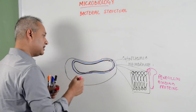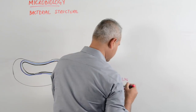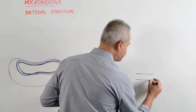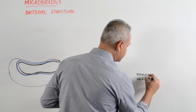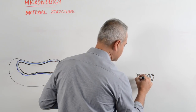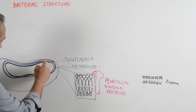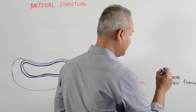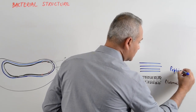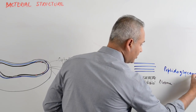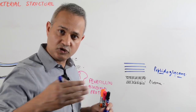So this is the plasma membrane. Outside the plasma membrane is the cell wall. The cell wall structure is actually a peptidoglycan. What happens is there are multiple layers of peptidoglycans. Peptido-glycan means it is made up of peptides and glycans — glycans meaning sugars. So there are multiple sugar backbones.